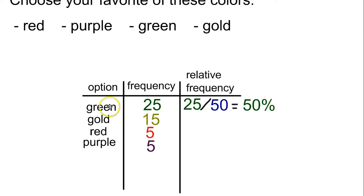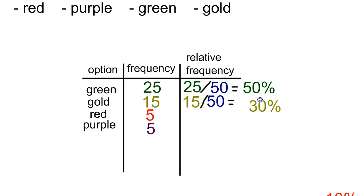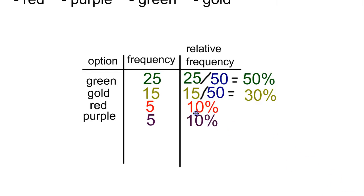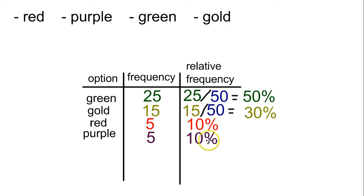So if you want to figure out, oh, half of the people said green is their answer, that tends to be more useful than 25 out of an unknown number selected green. And you do the same thing with the others. So with gold, 15 out of 50 is going to be 30%. And you do the same with the remaining option. So the red is going to be 5 out of 50, which is 10%. And the purple is going to be 5 out of 50, which is 10%. So the relative frequency could express it as a decimal, but more often you're going to see it as a percentage.